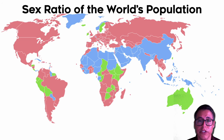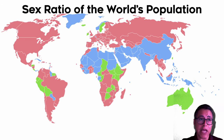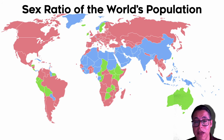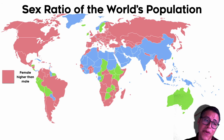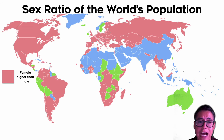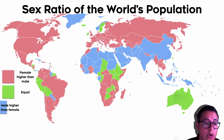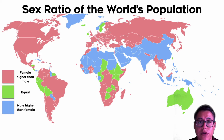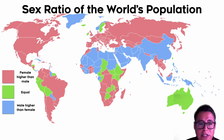Geographers also look at the sex ratio of the world's population, which is the number of males per 100 females in a country. On this map, the ratio is represented by three different colors. Pink means the ratio of males is lower than females. Green means the ratio is equal. Blue means the male ratio is higher than that of females. There is also a gray color indicating no data for those regions.